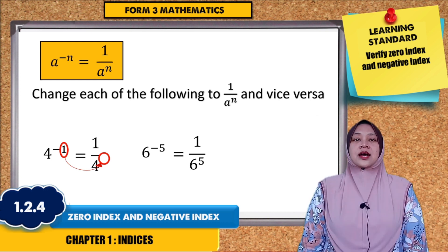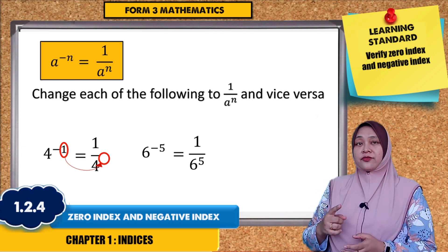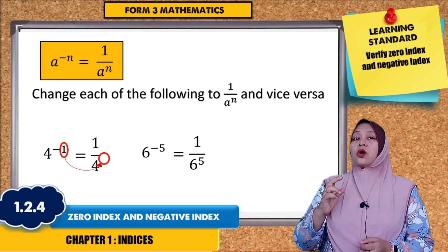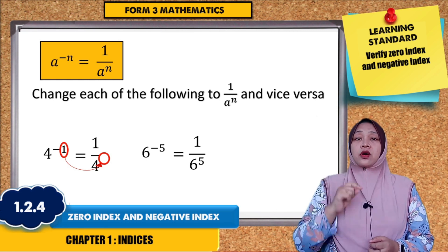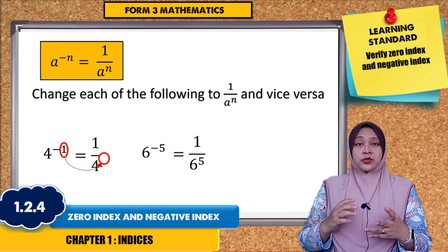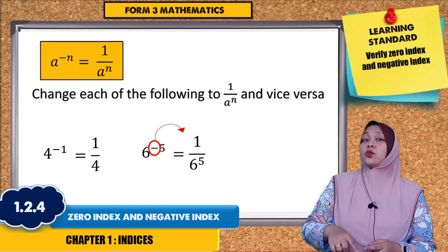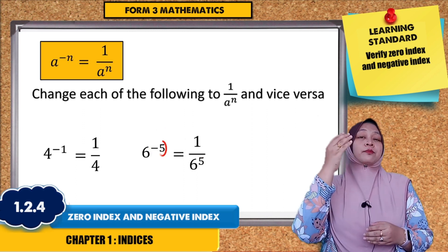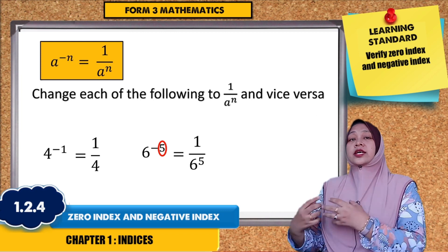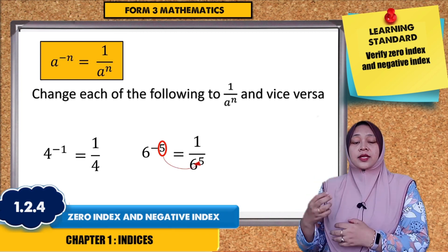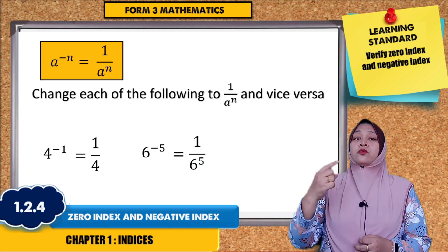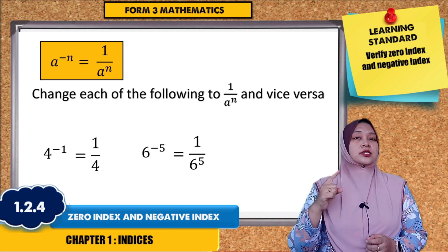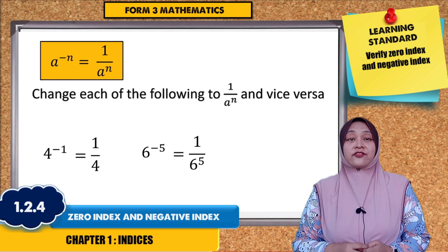Let us see the second one. 6 to the power of negative 5 will give the answer 1 over 6 to the power of 5. Negative changes to 1 over, and 6 to the power of 5 goes as the numerator. The final answer is 1 over 6 to the power of 5.